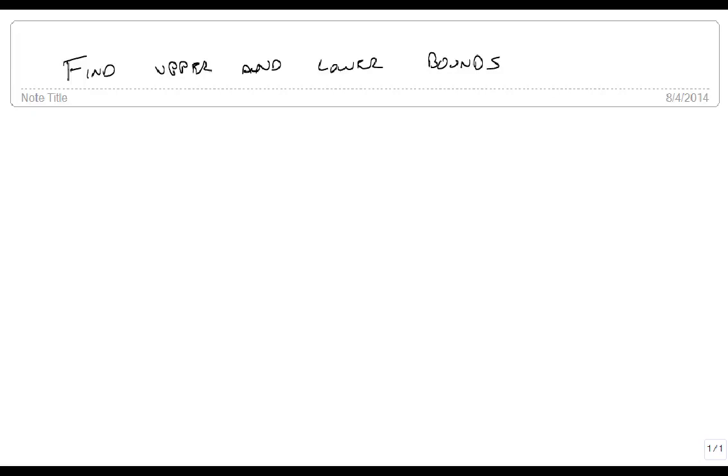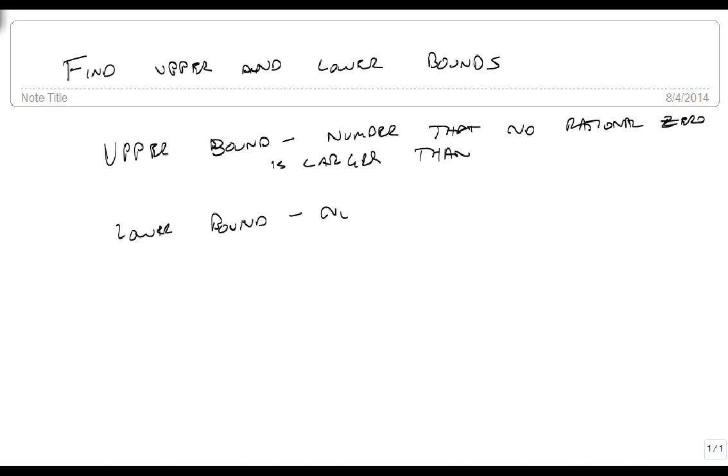We're now going to talk about how we can recognize when we found an upper or lower bound. Remember, an upper bound is a number that no rational zero is larger than.